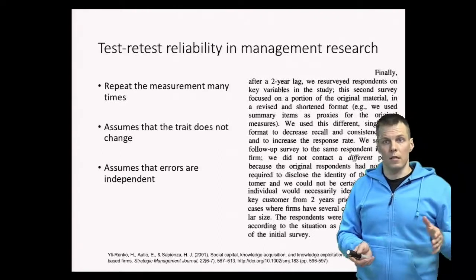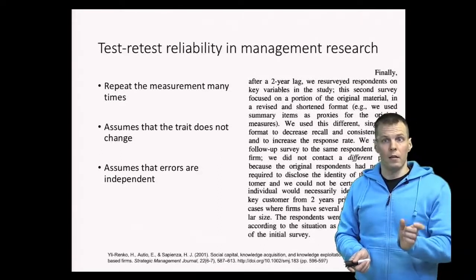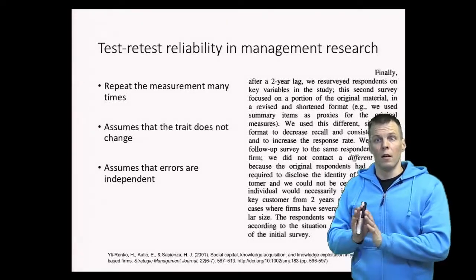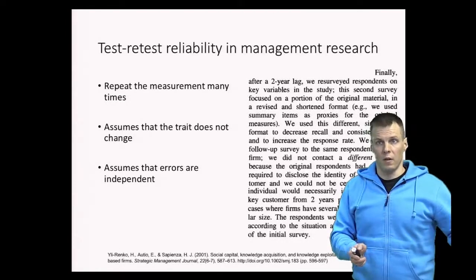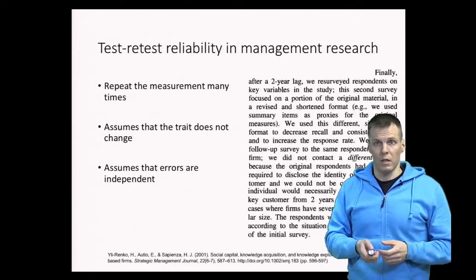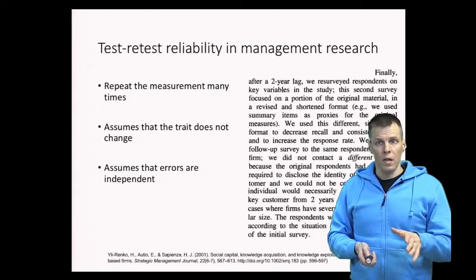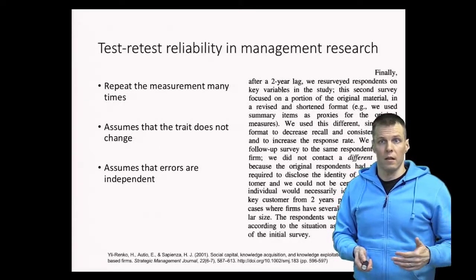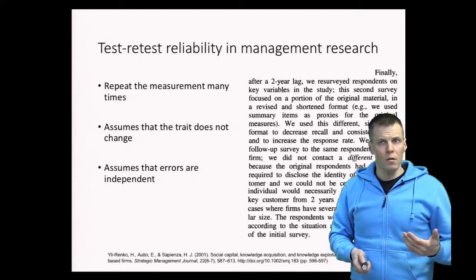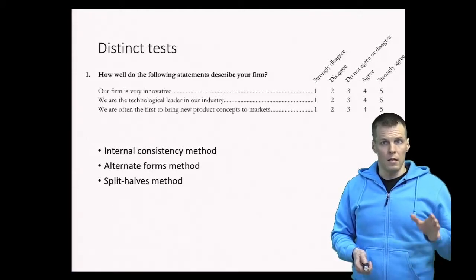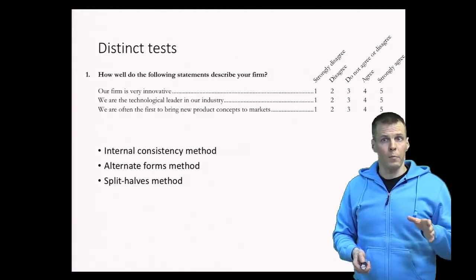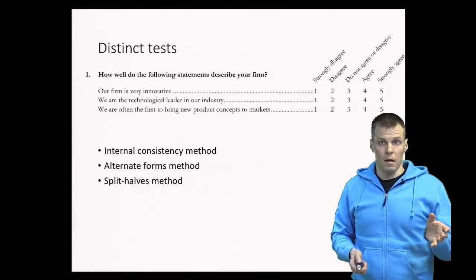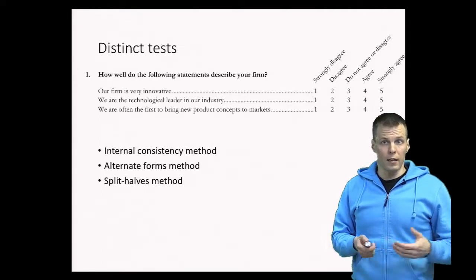Test-retest means you measure the same thing again with a time delay appropriate for your measure and the trait being measured, so that it allows people to reset between measurements but the trait doesn't substantially change. This is not as commonly used because doing two rounds of a survey study is more expensive than doing just one round. So we more commonly use another way: the distinct test approach.